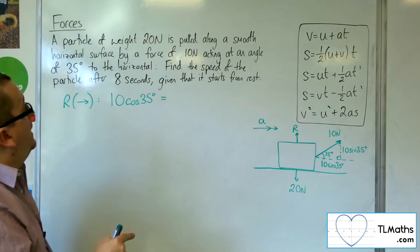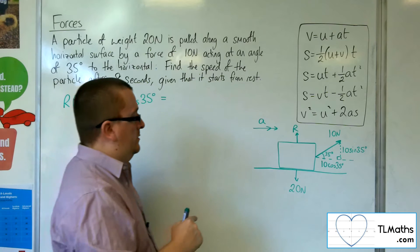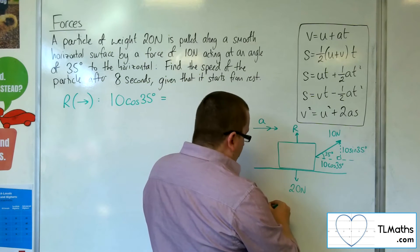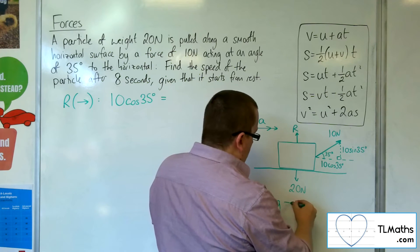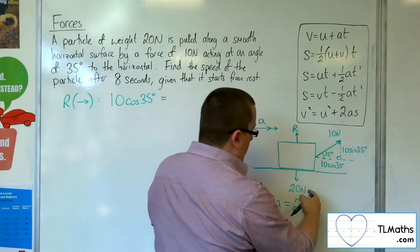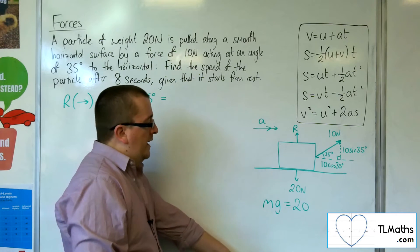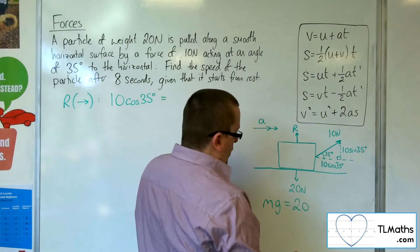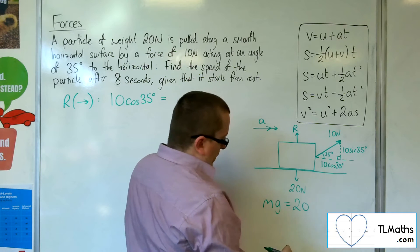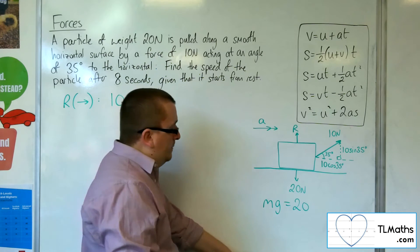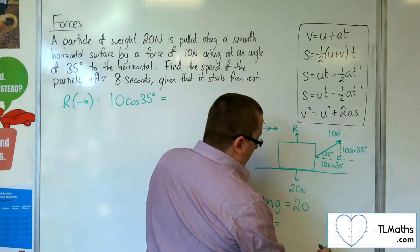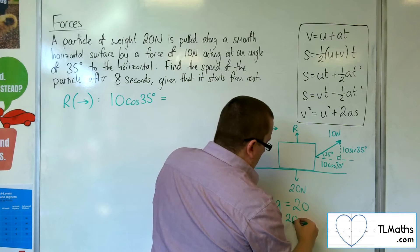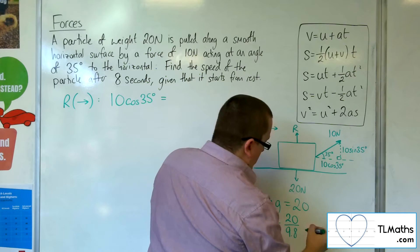Now, I'm not told the mass, I'm told the weight of the particle. So, if mg is equal to 20, because that's the weight, then I know that m is 20 over g. So, I'm going to use 9.8 here. Perhaps the question will say otherwise.